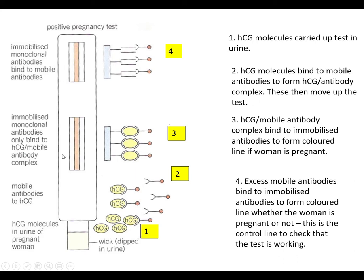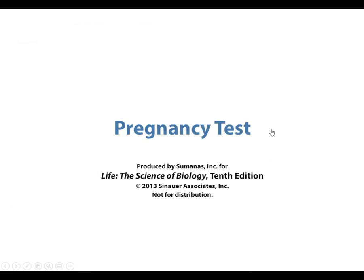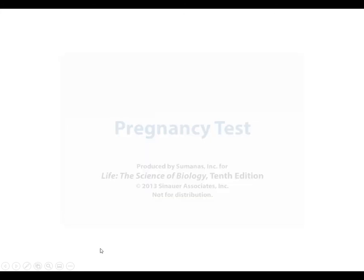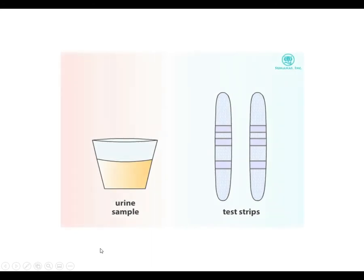So if you're pregnant you get two lines appearing; if you're not pregnant you just get the one control line at the top. Here are a couple of examples of positive pregnancy tests. Let's watch this animation.